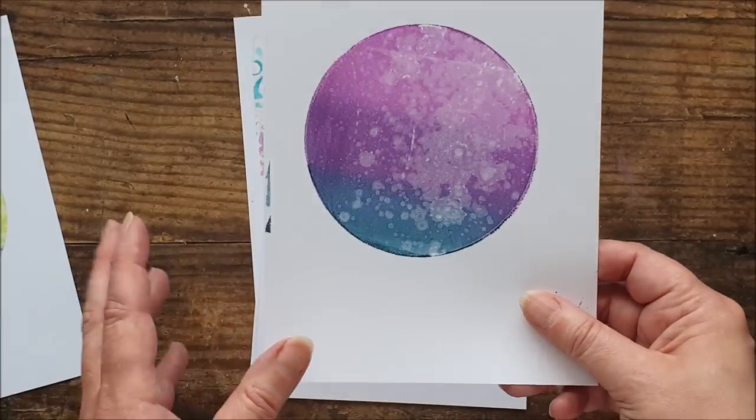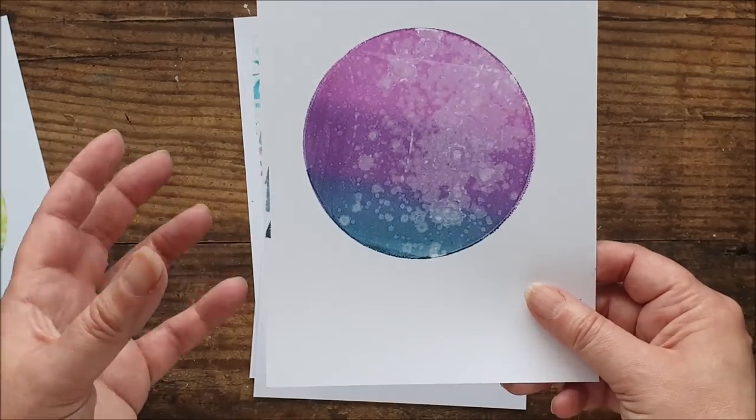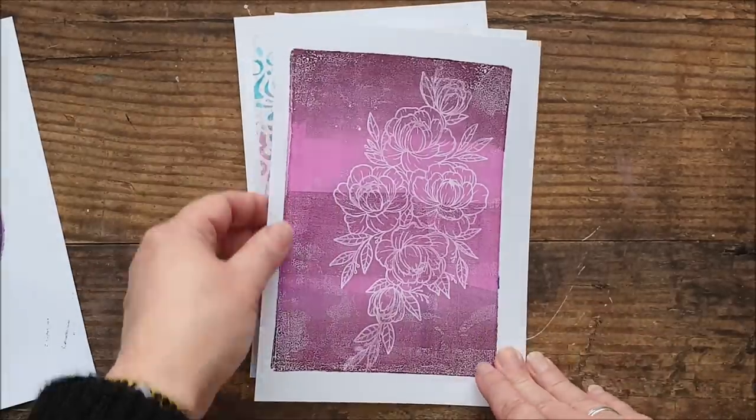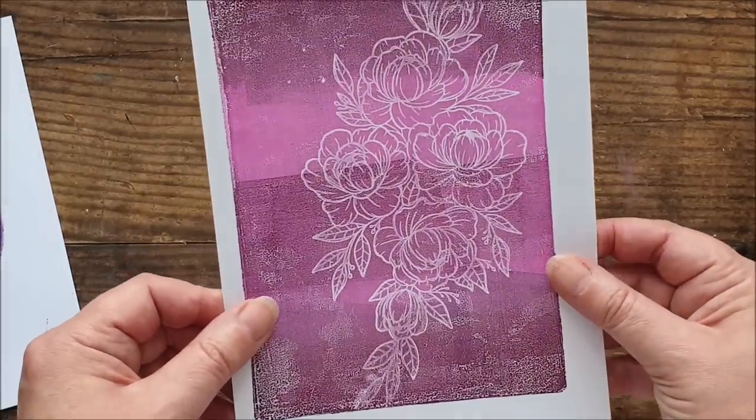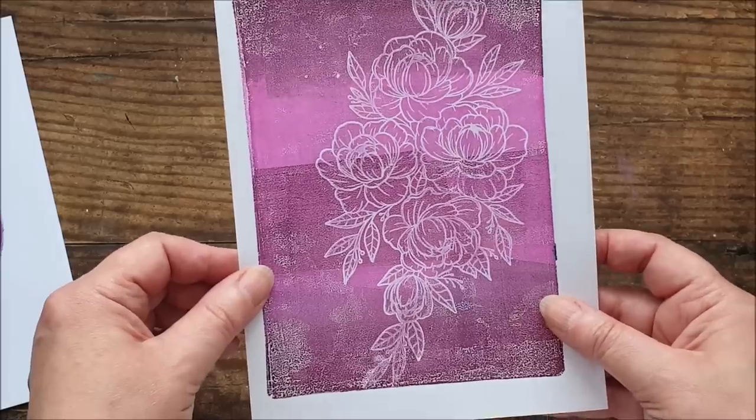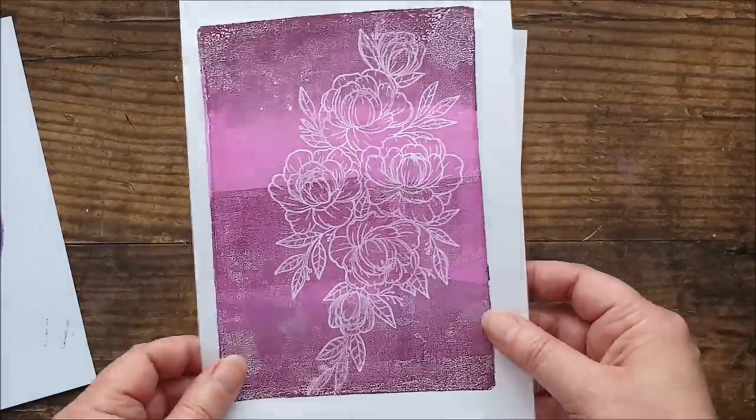I really like that. Nice, just subtle mottled effect in the background, perfect for adding a die cut image or stamped sentiment or something over the top. Then we used our stamp to create this lovely negative image with this beautiful floral stamp. I really like that. I think that just trimmed down and matted and layered is going to create a very striking card.